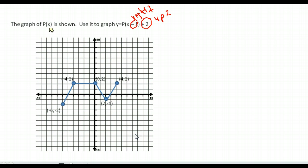Let's start with the point negative 6, negative 2. One to the right and up 2 puts me here — I'll use black for my new point. Let's do the same thing with negative 4, negative 2: move it 1 to the right and up 2. Then the point 0, 2 — 1 to the right and up 2, and there's our result.